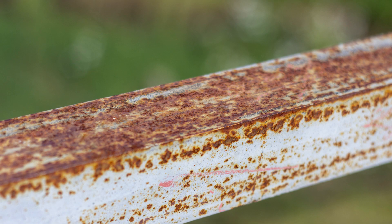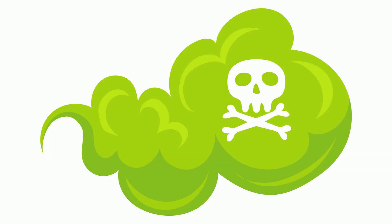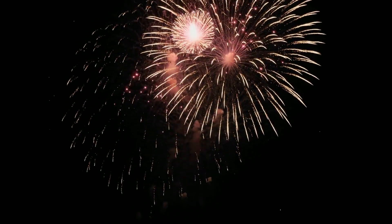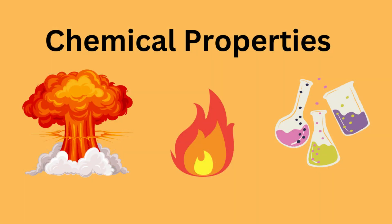Corrosive — can the object strip electrons from metals? Toxic — this is a substance that can be poisonous or cause health effects. Explosive — a substance that contains a great amount of potential energy that can produce an explosion. And pH is a chemical property; this is the potential of hydrogen, and it's a measure of how acidic or basic a substance is. These are all examples of chemical properties.